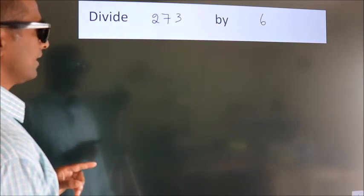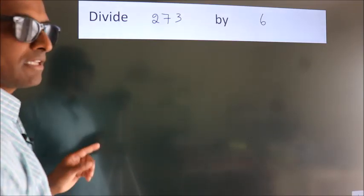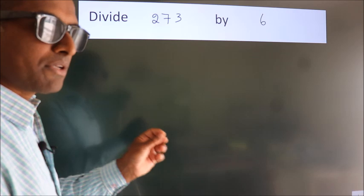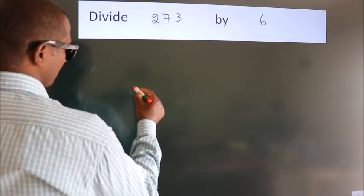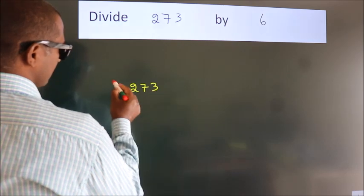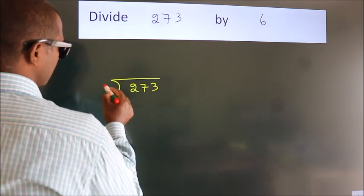Divide 273 by 6. To do this division, we should frame it in this way. 273 here, 6 here.